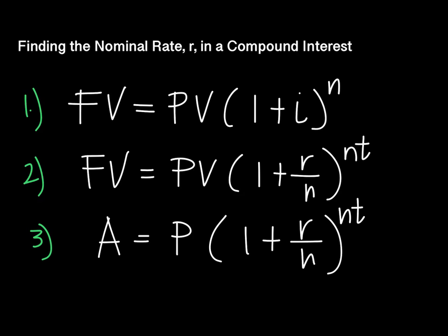The first one: FV is the future value, PV is the present value, and I here is actually R over N, where N is the number of times the interest is compounded.